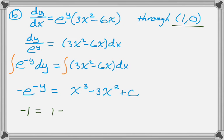Now we'll solve for C. So we knew the point (1, 0), and we substituted in. We get negative 1 equals 1 minus 3 plus C, so C is 1.